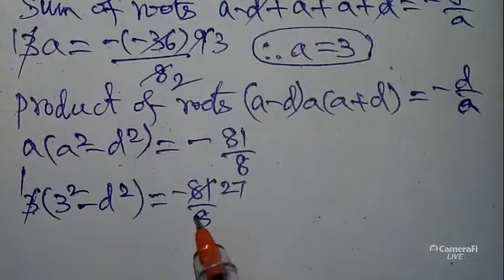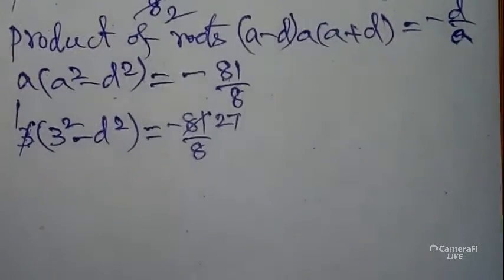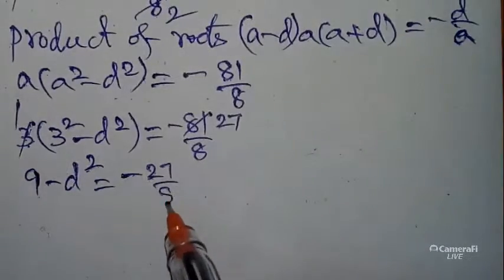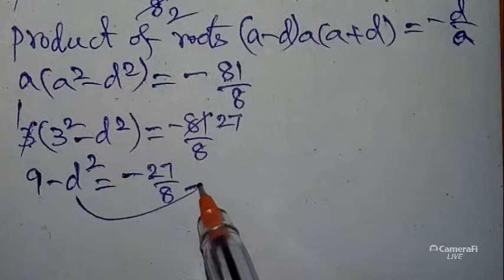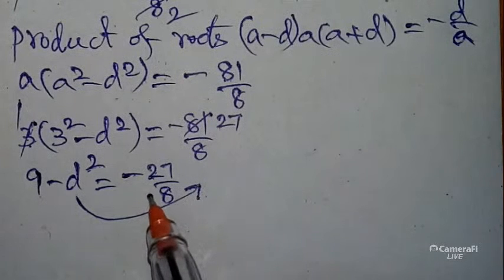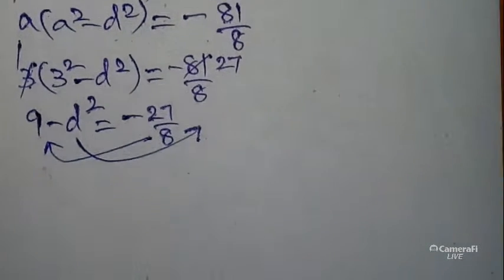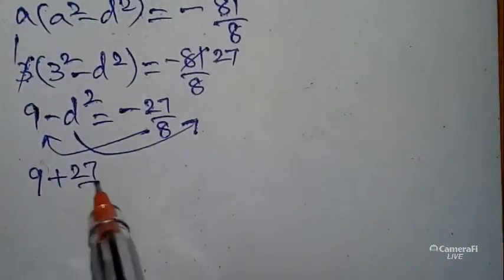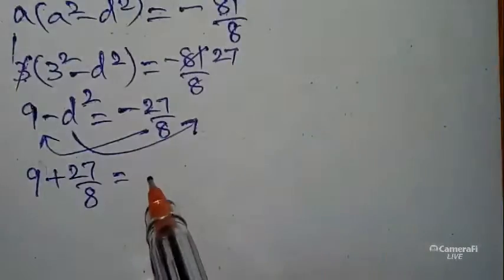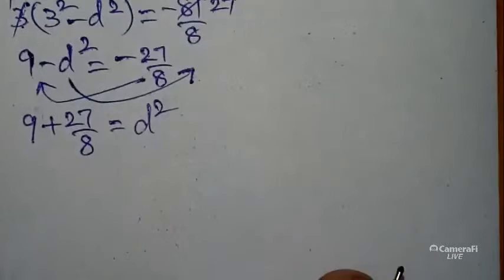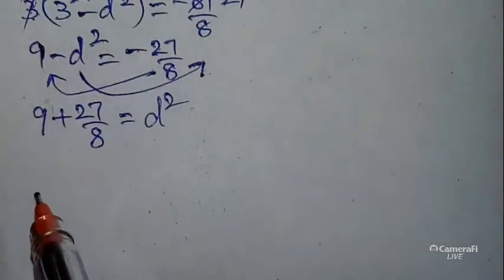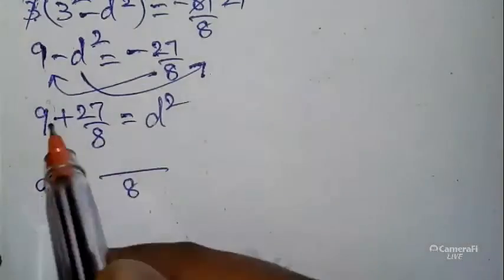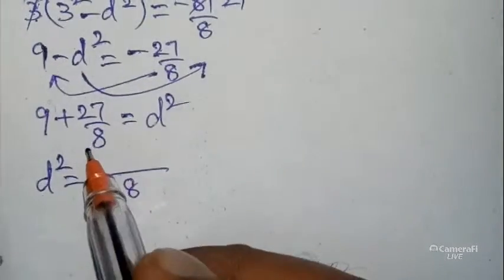So 9 - d² = -27/8. Rearranging, d² = 9 + 27/8. Taking LCM 8, this becomes d² = (72 + 27)/8.